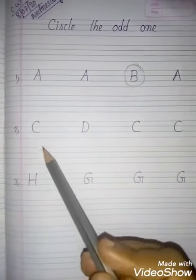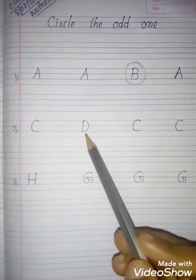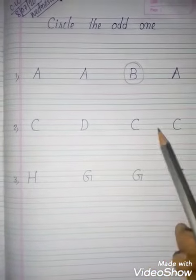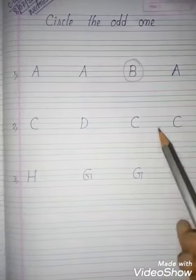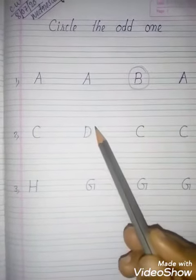In the second line, you will search which one is different. This is C for cat, D for dog, C for cat, C for cat. Which one is different? D for dog. What you will do? You will circle this like this.